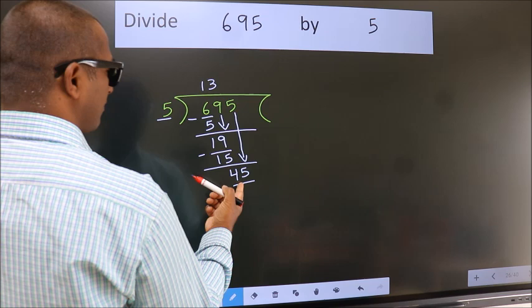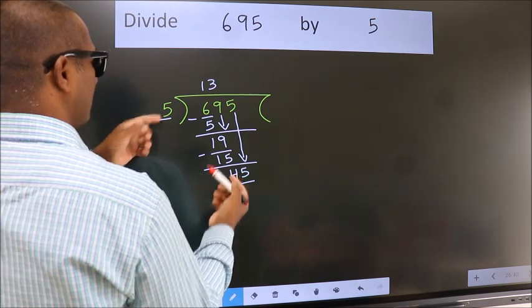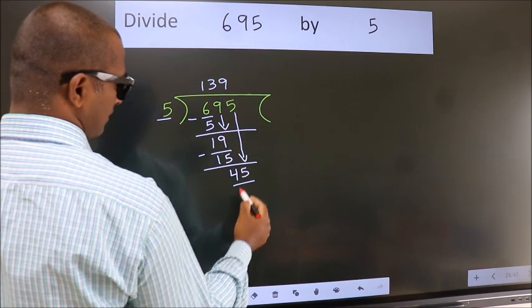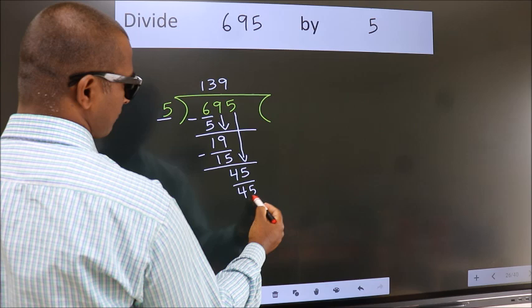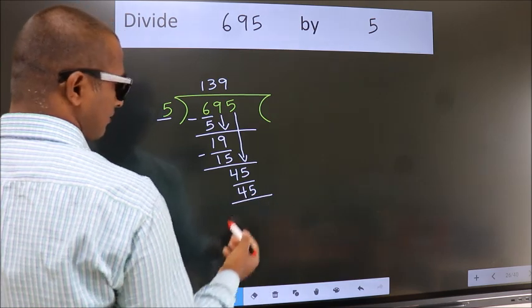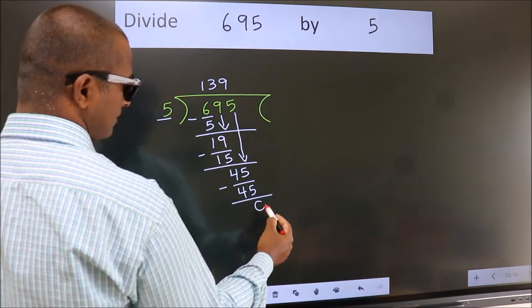When do we get 45 in the 5 table? 5 nines, 45. Now we subtract. We get 0.